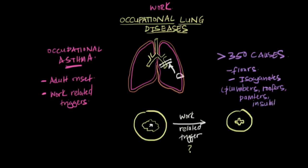Insulators can also become exposed to isocyanates. Something really important to keep in mind is that even though there are 350 identified causes, not everyone exposed to one of these causes is going to develop occupational asthma. So, occupational asthma is the most common type of occupational lung disease.